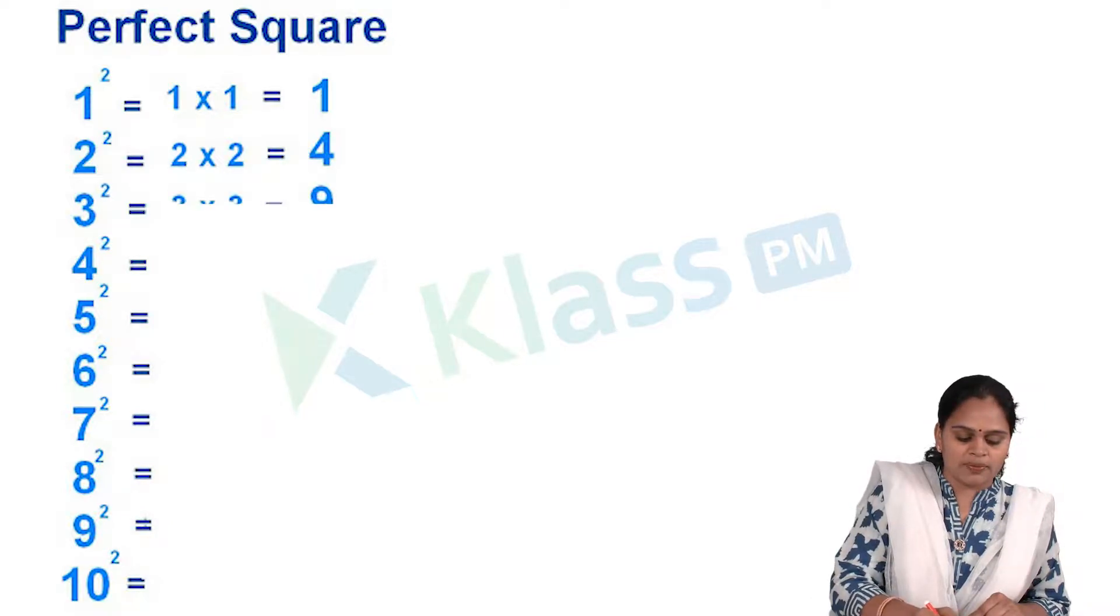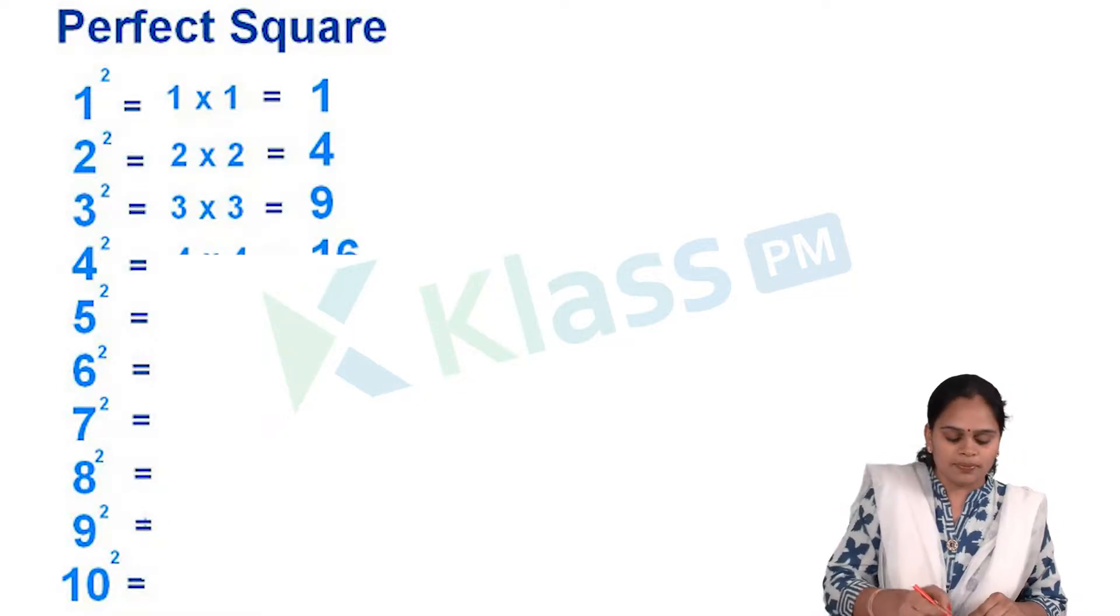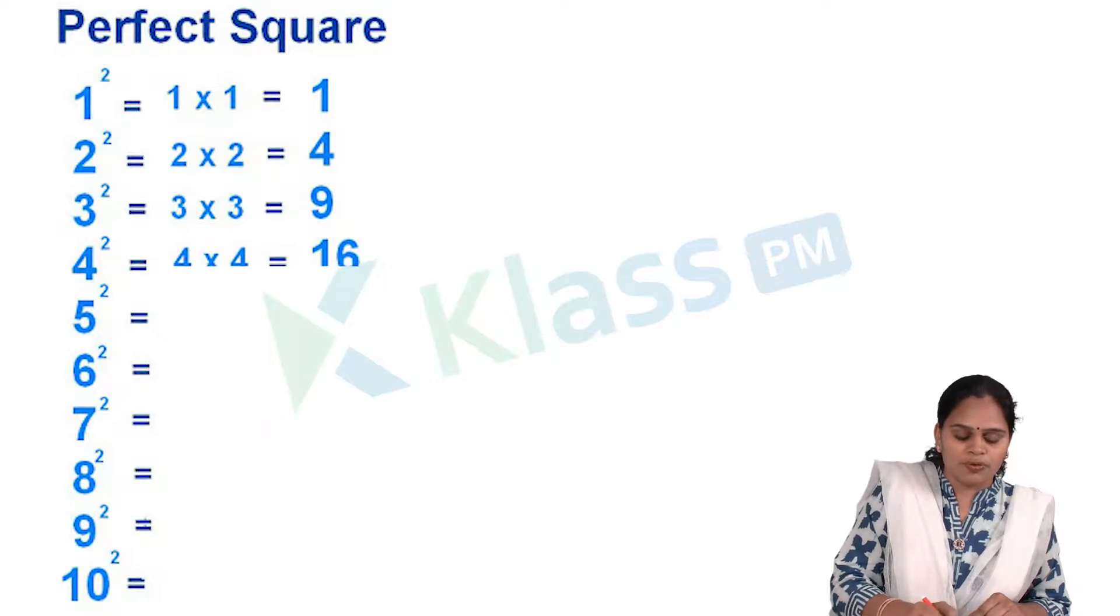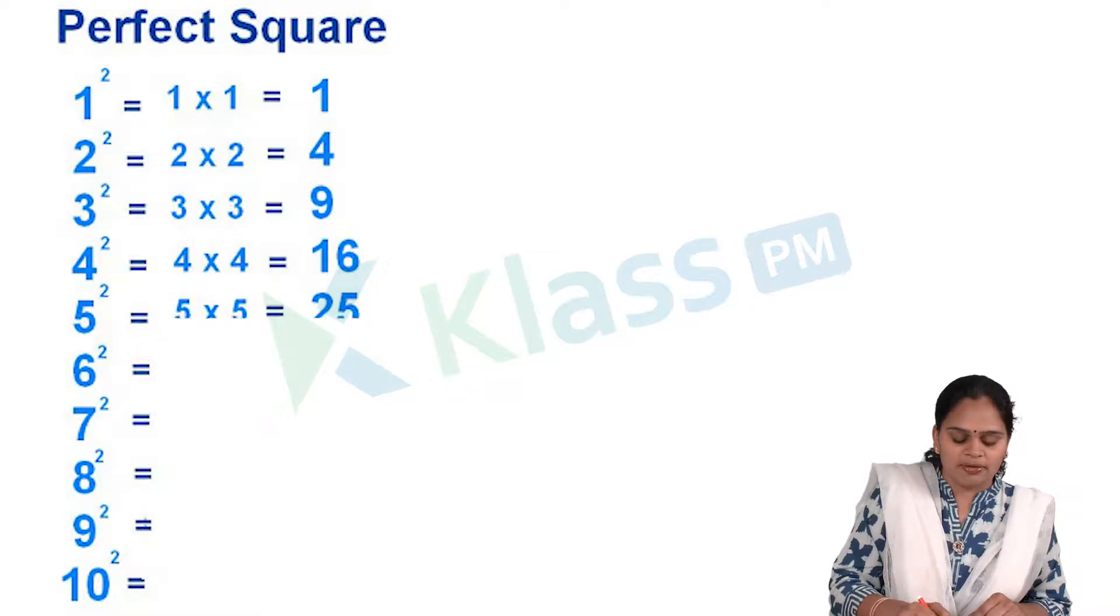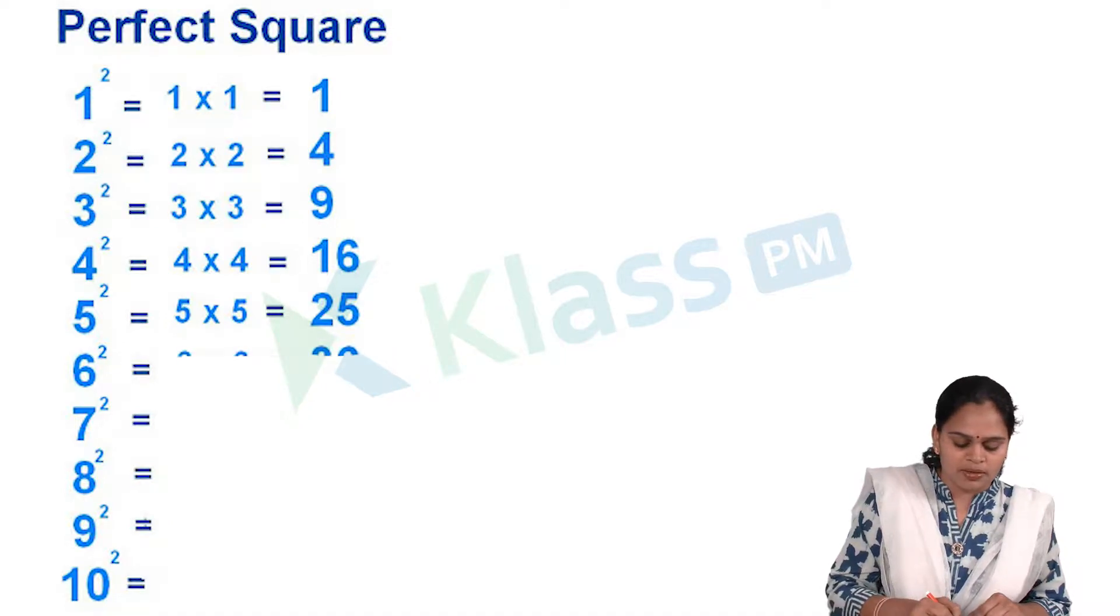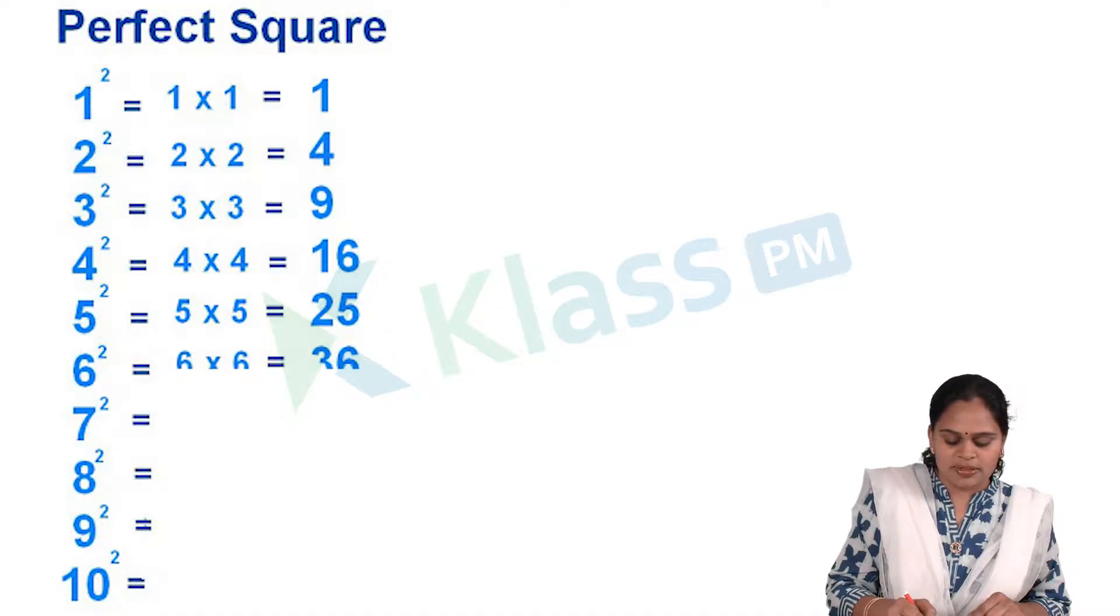3 square, 3 into 3, that is 9. Coming to 4 square, that is 4 into 4, that is 16. 5 square, 5 into 5, that is 25. 6 square, that is 6 into 6, 36.